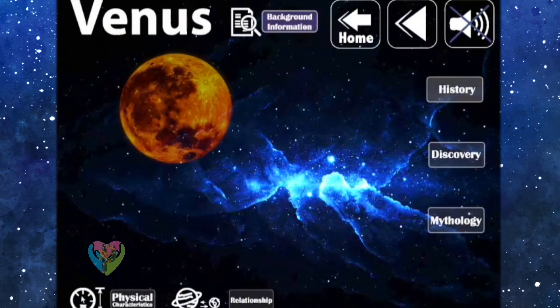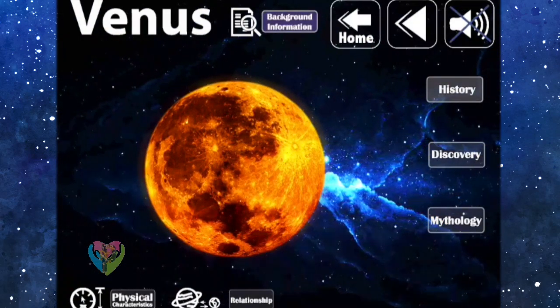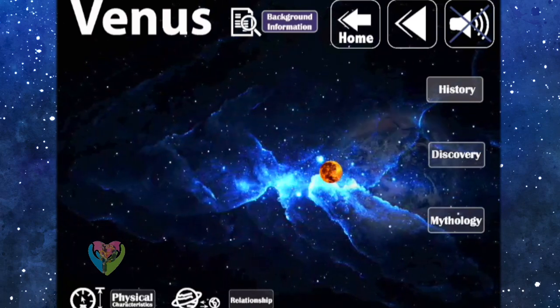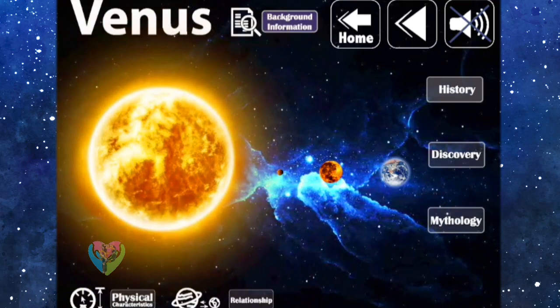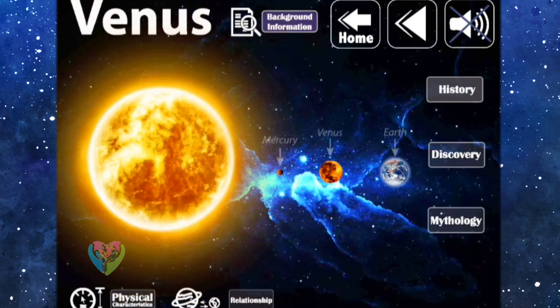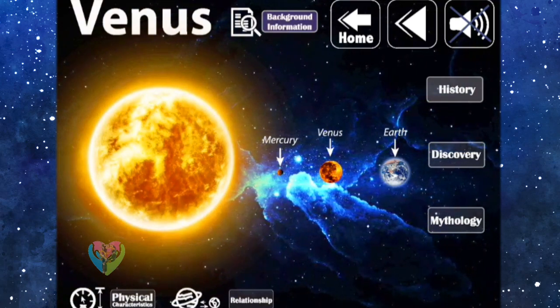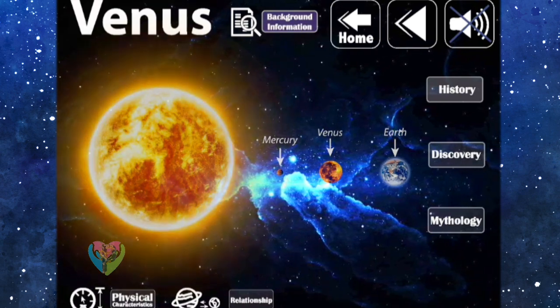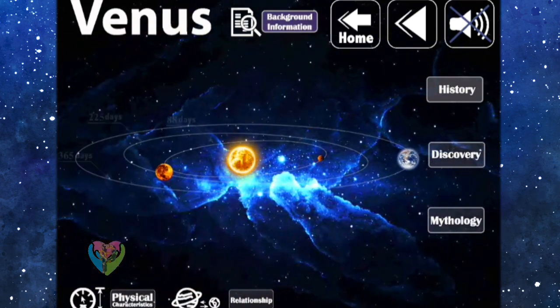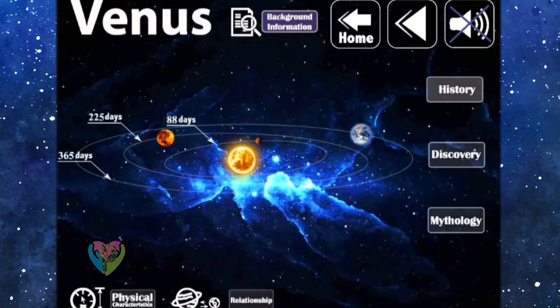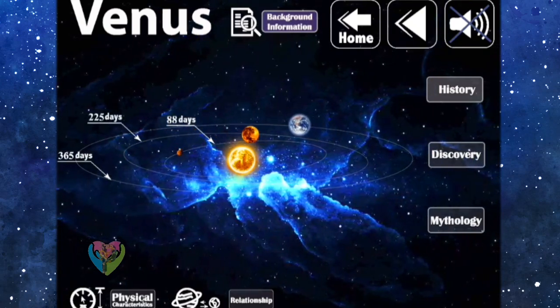Background information. Venus is the second planet from the Sun, with the orbit that is almost circular in the inner circle. Venus has no natural satellites or moons. Venus is slightly smaller than the Earth, then it is sometimes called as the Earth's sister or twin planet.